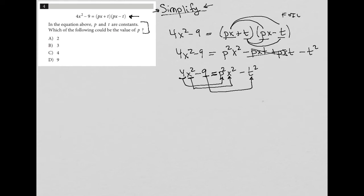So let's see what the question is asking for. The question says, in the equation above, p and t are constants. Which of the following could be the value of p? Well, if I know that 4 has to be equal to p squared, then I could say, p would need to equal, I could square root both sides. I get p is equal to 2, and therefore my correct answer here is choice A.